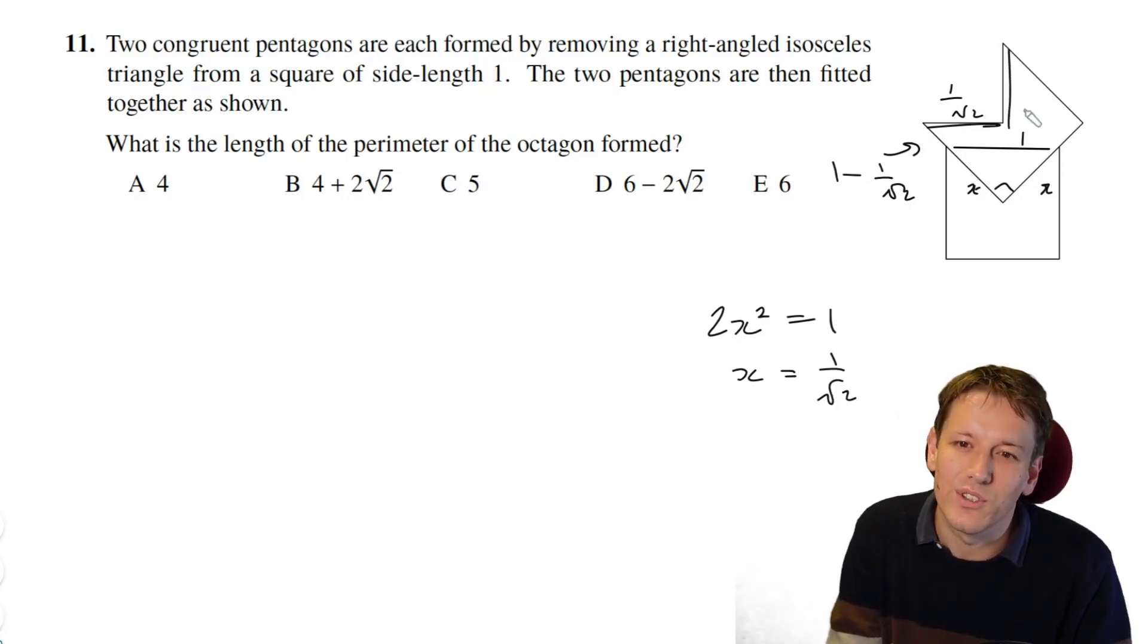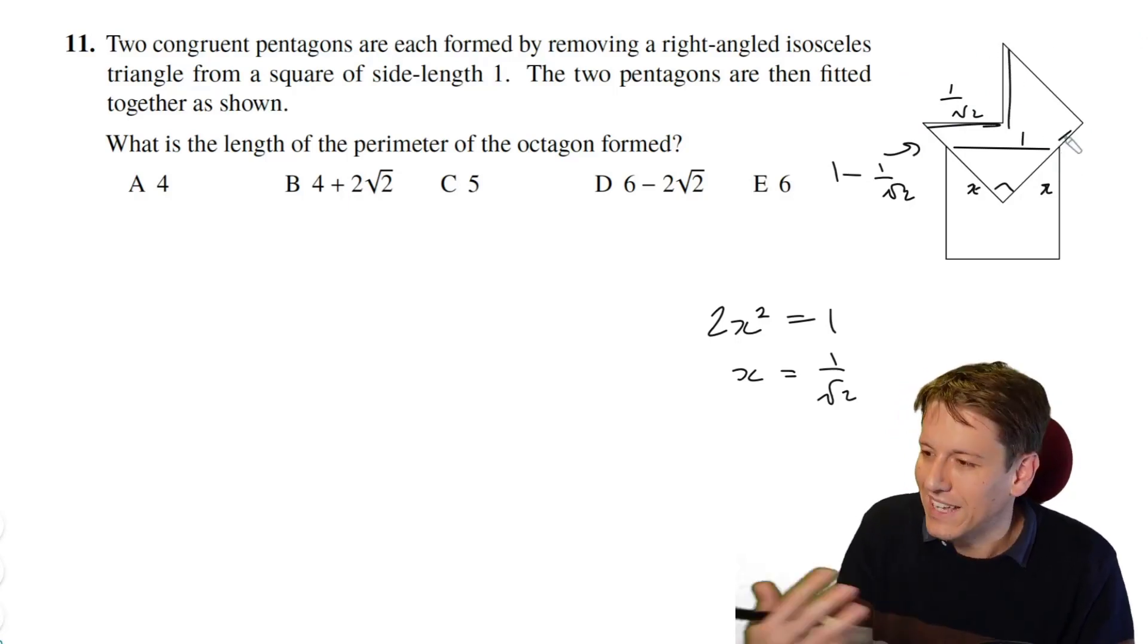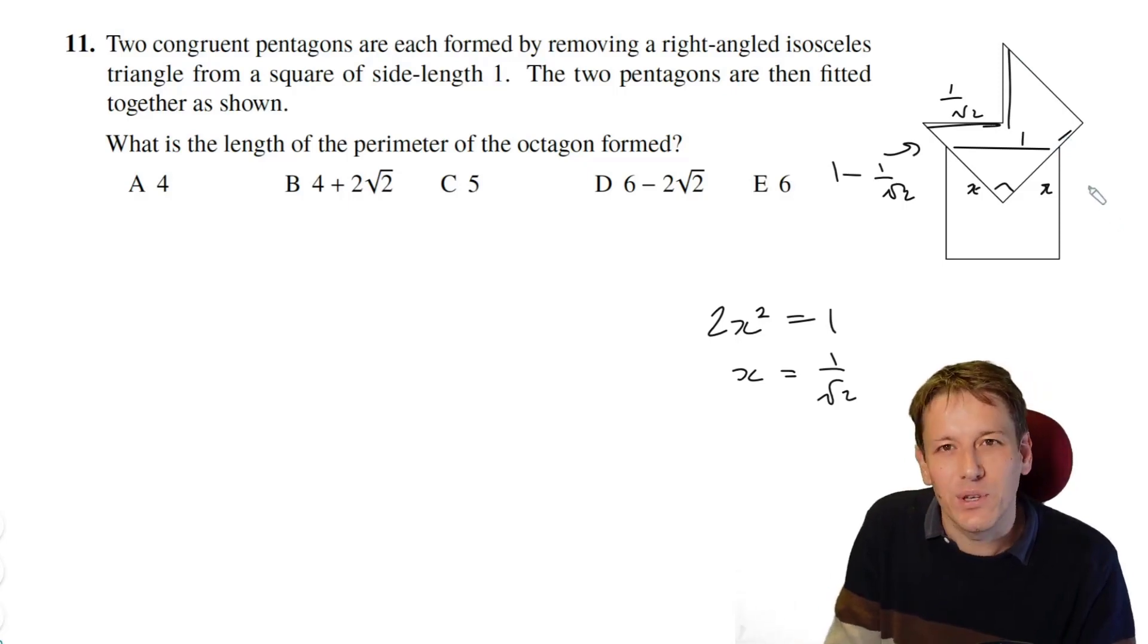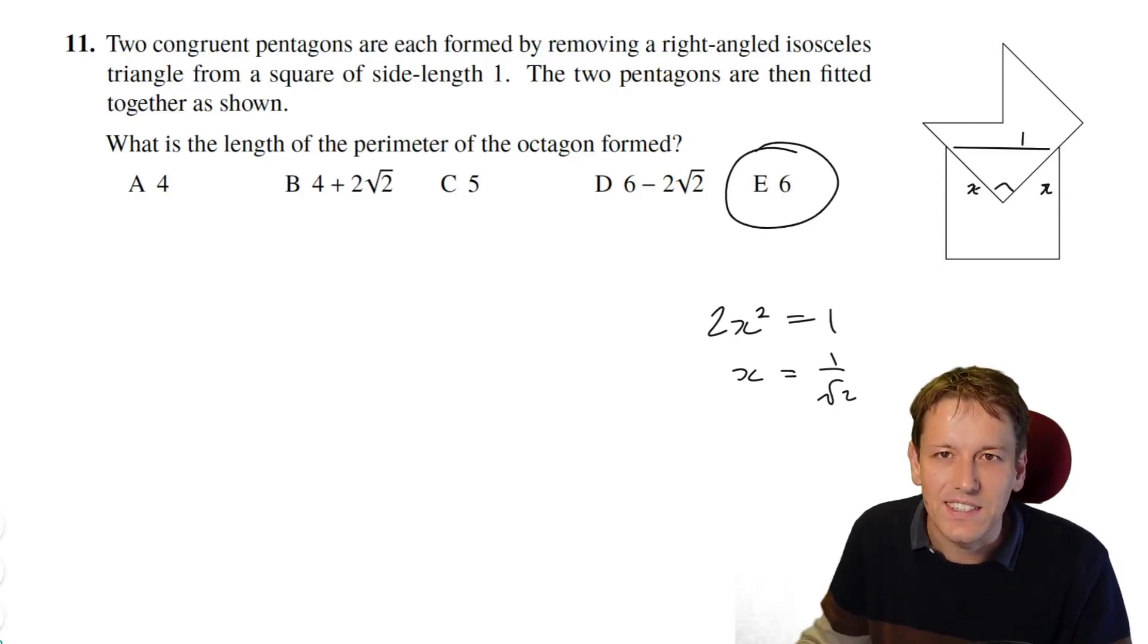x squared plus x squared is 1 squared, so x would be 1 over the square root of 2. So this side length here would be 1 minus 1 over root 2, and this one would be 1 over root 2. And again, when you add those together, you get 1. So the answer is E, 6.